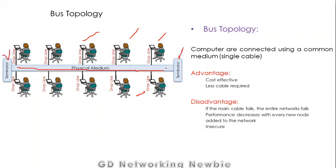The terminator is used to absorb signals traveling to the end of the cable, because without a terminator the signal would be reflected back and interfere with other signals. The advantage of bus topology is that it is cost effective, as less cable is required compared to other topologies. The major disadvantage is that if the main cable fails, no node will be able to transmit data — the entire network fails.